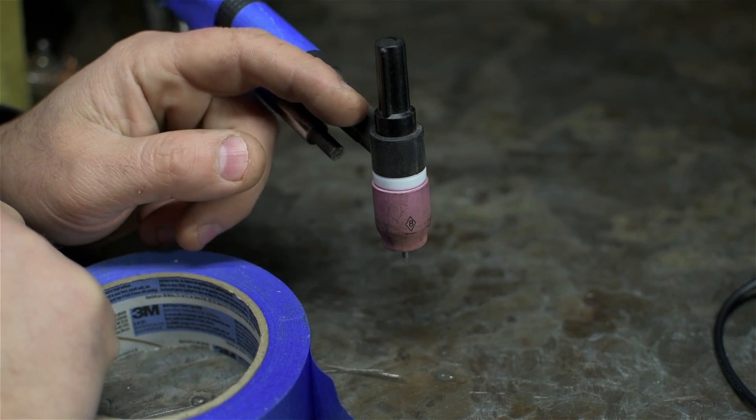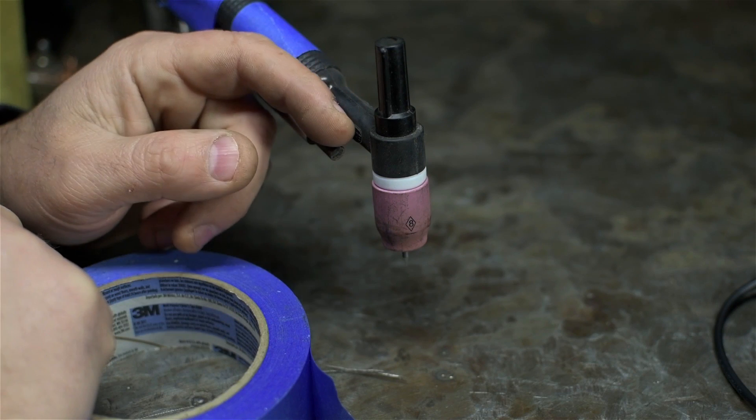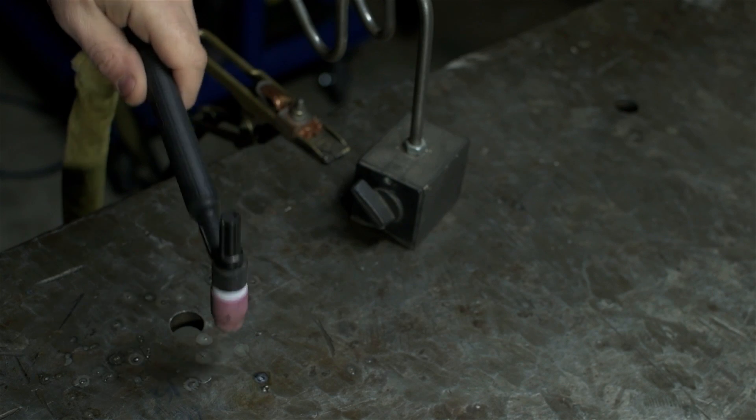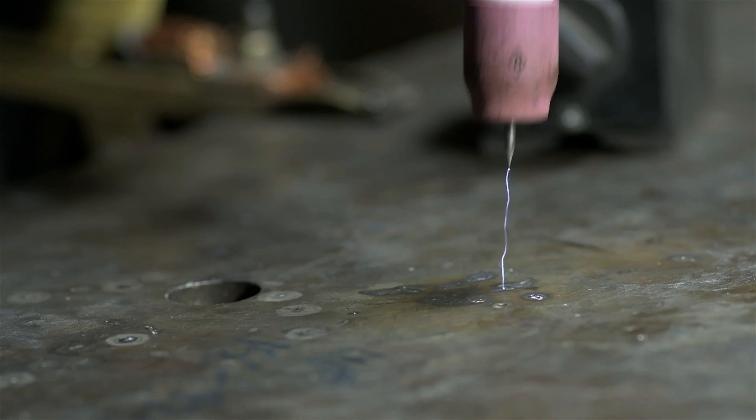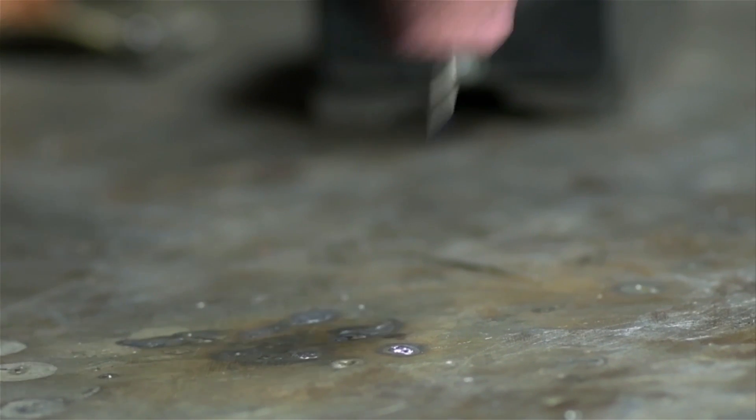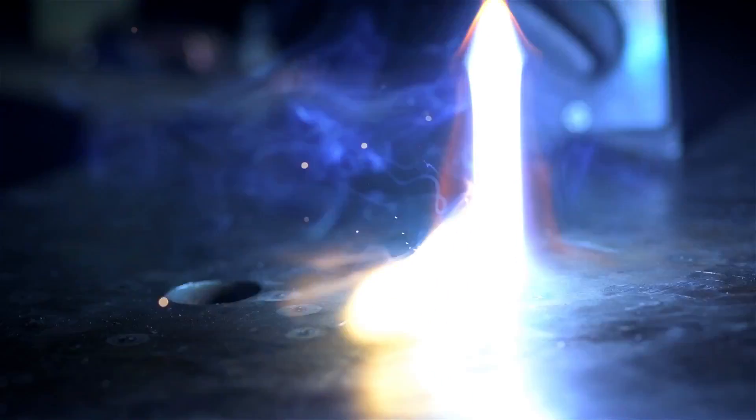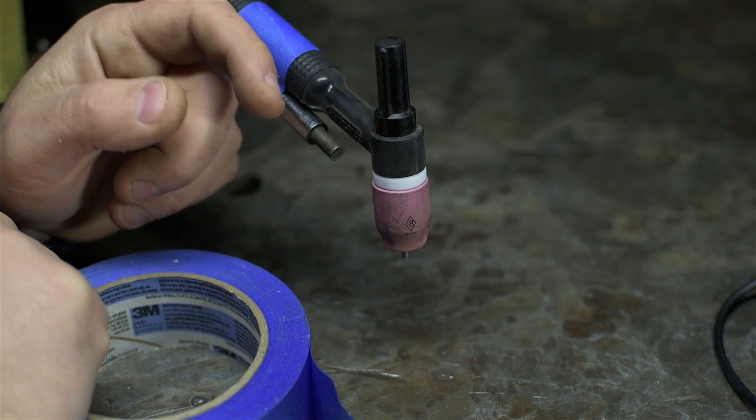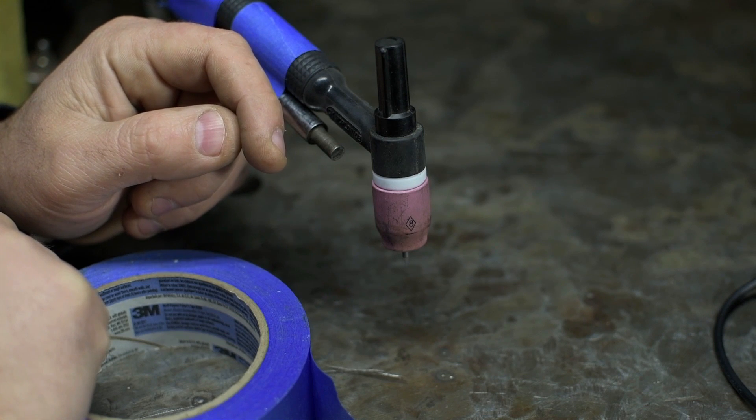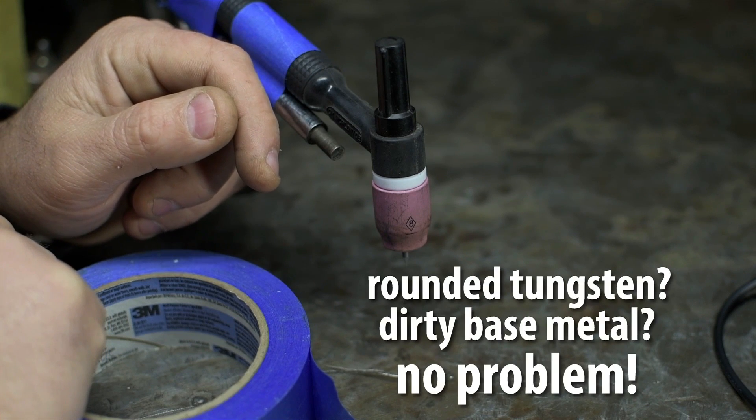The first problem I ran into trying to get a read on the HTP is its apparent anti-espionage features, specifically the high-frequency start. Now, although that kind of power is spectacular for initiating an arc, it nearly fried my scope. Rounded tungsten tip? Dirty base metal? No problem at all with this welder. Oscilloscope? Not so much.